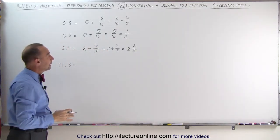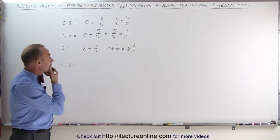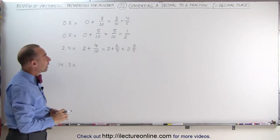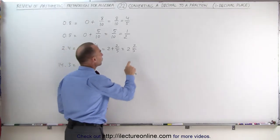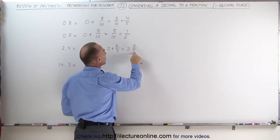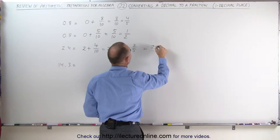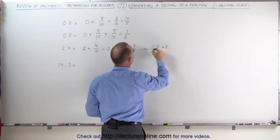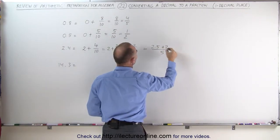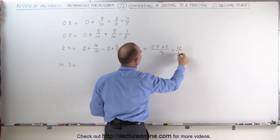We can also convert a mixed number into an improper fraction. How do we do that? We multiply the whole number by the denominator and add it to the numerator. This can be written as 2 times 5 plus 2 divided by 5, which is 10 plus 2 or 12 divided by 5.